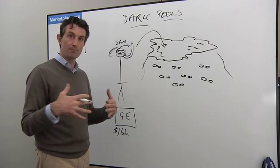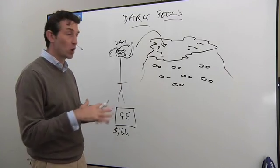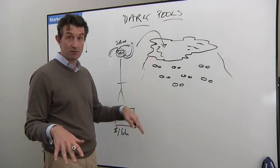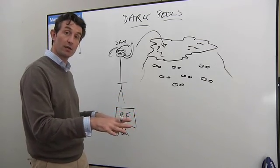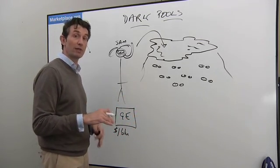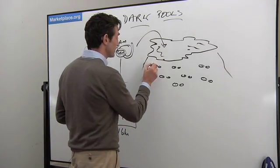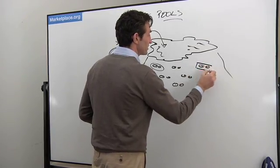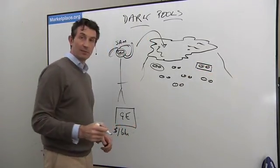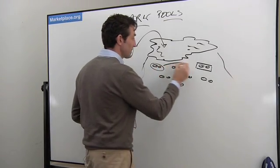And the system, the electronic system, matches him up with another buyer, totally anonymously. Nobody knows who's in. Nobody knows who the buyer is. Nobody knows who the seller is. None of these people know who they are. They're all just connected in this dark pool electronically. So here's Sam with his mask on. And here's his buyer. His buyer says, yep, I'll take a billion dollars of GE.